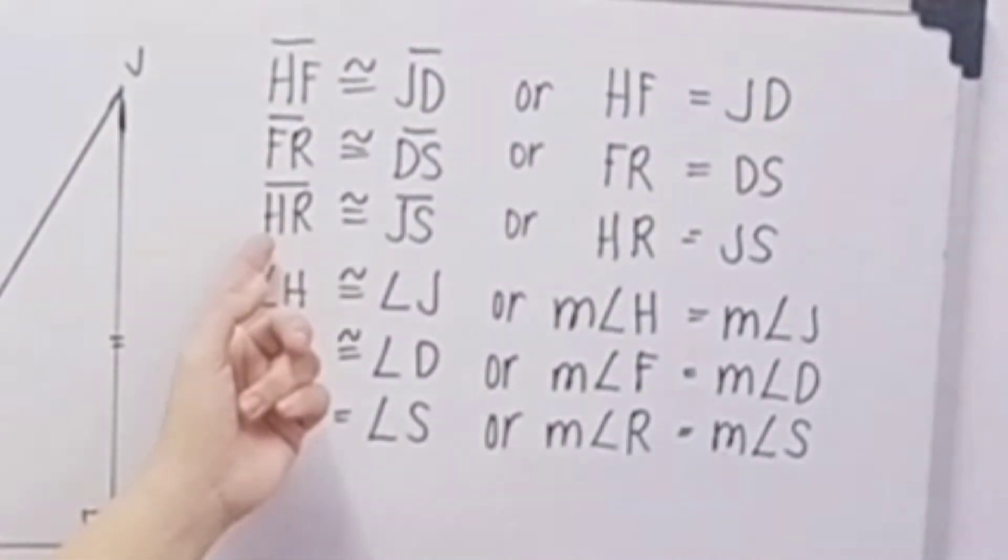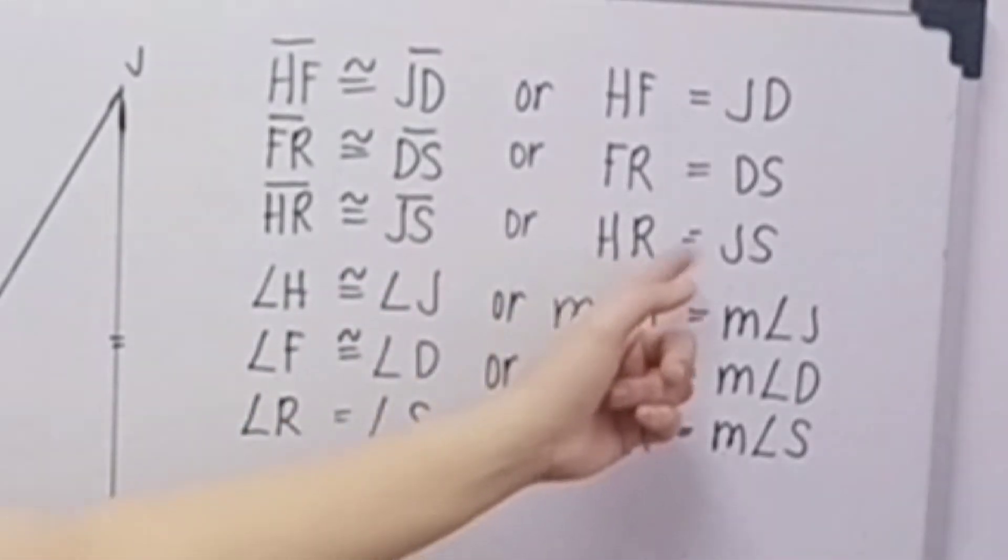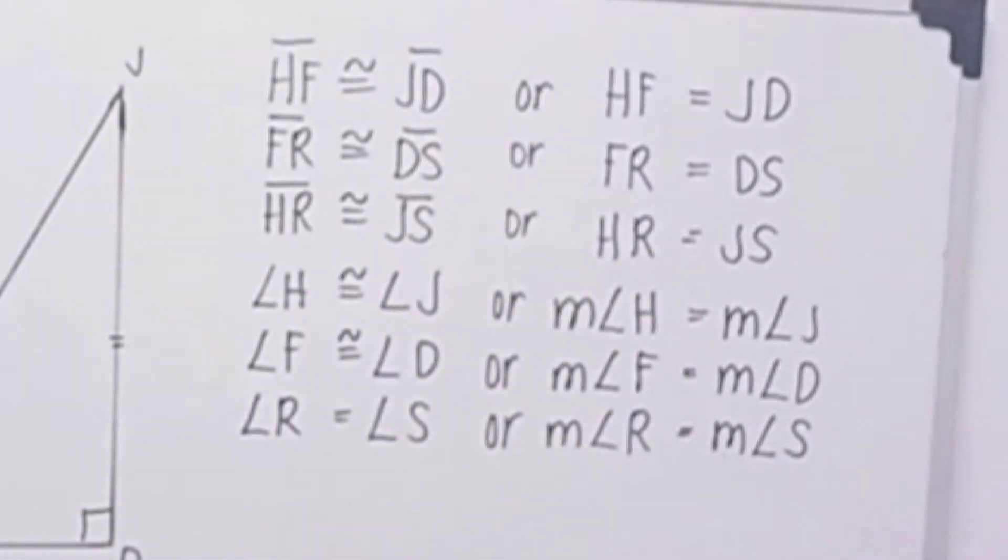And then we have segment HR is congruent to segment JS, or HR is equal to JS. And then we have the three angles. Angle H is congruent to angle J, or measure of angle H is equal to measure of angle J.